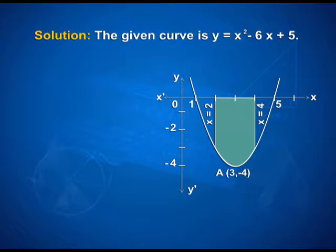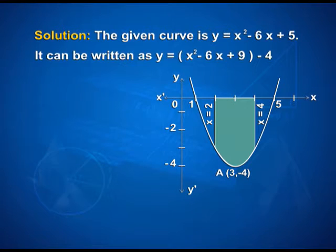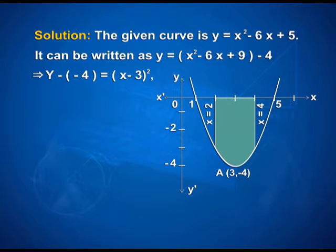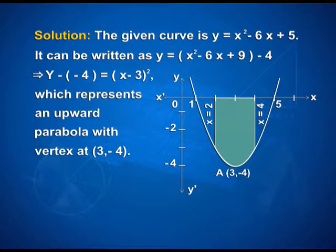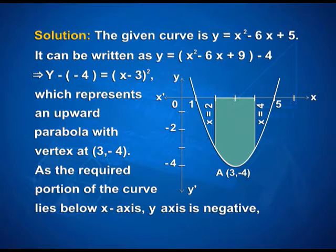For the solution, the given curve is y is equal to x squared minus 6x plus 5. It can be written as y is equal to x squared minus 6x plus 9 minus 4, where 5 is written as 9 minus 4, so that y plus 4 can be written as (x minus 3) squared, which represents an upward parabola with vertex at (3, -4). As the required portion of the curve lies below the x-axis, y is negative.